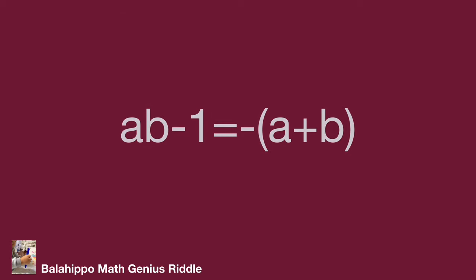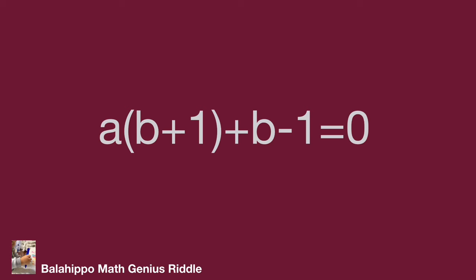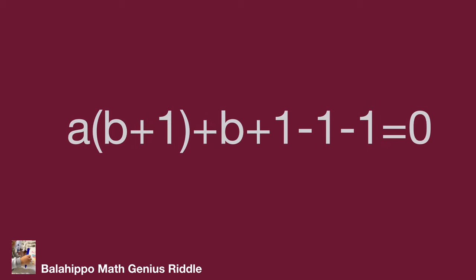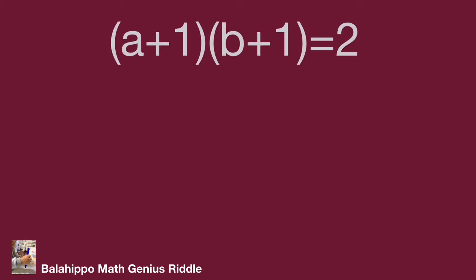For the second case: ab+1 = -(a+b). Move all items to the same side and try to generate the factor (b+1). Adding +1 and -1 into the equation, we get a(b+1) + (b+1) - 2 = 0. Finally, this gives another equation: (a+1)(b+1) = 2.